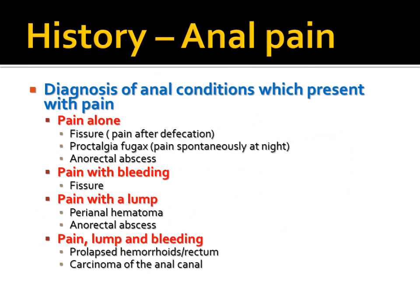Diagnosis of anal conditions presenting with pain: pain after defecation suggests fissure. Pain spontaneously at night is seen in proctalgia fugax. Pain alone is seen in anorectal abscess. Pain with bleeding suggests fissure. Pain with a lump — if there is an anal illness — can be perianal hematoma or anorectal abscess. Pain with a lump and bleeding can indicate prolapsed hemorrhoids, rectal prolapse, or carcinoma of the anorectal region.